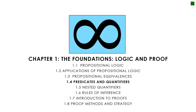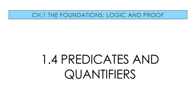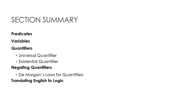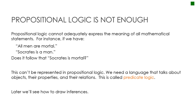This video covers section 1.4, predicates and quantifiers. It's a longer video — you might want to watch it in two stages. We've spent quite a bit of time talking about propositional logic, but that's just not enough to deal with all situations we might come across. For instance, if we have 'all men are mortal' and 'Socrates is a man,' does it follow that Socrates is mortal? We can't represent that in propositional logic — we have to use something called predicate logic.